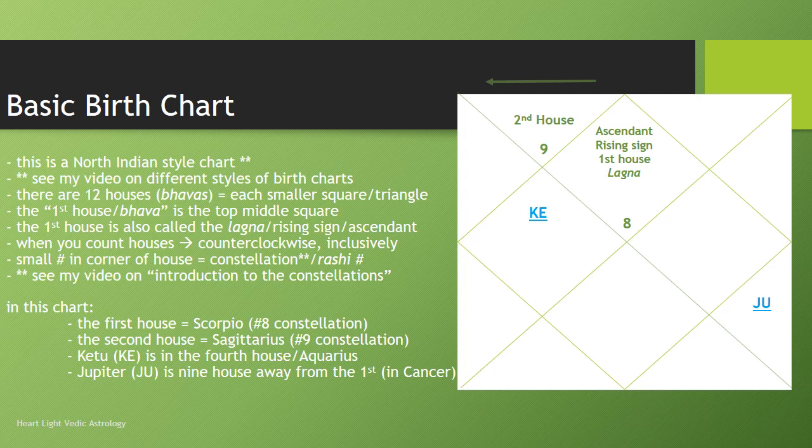As you can see, you have these little cross-hatchings here. What that means is you end up with these squares and triangles, and these different squares and triangles are twelve different houses, or bhavas as they're called in Sanskrit. So each square, each triangle is a house or a bhava — twelve of them.